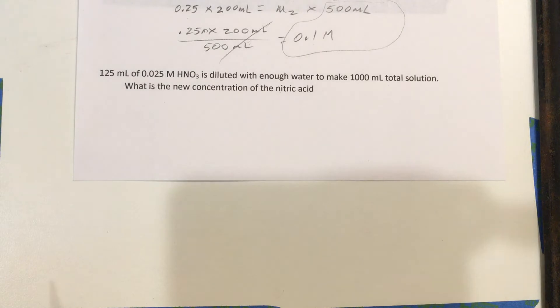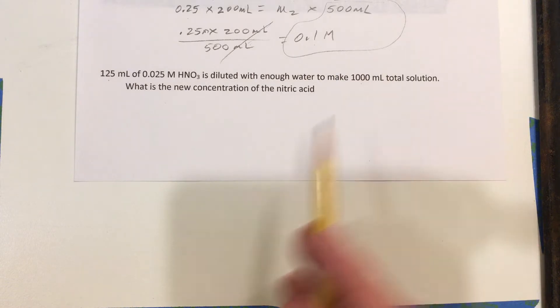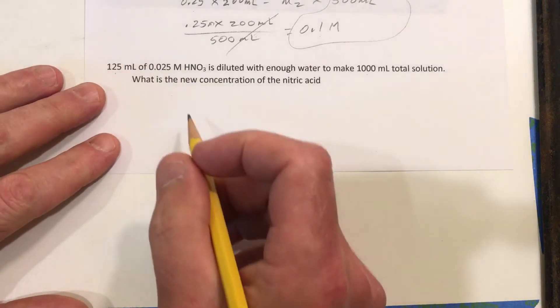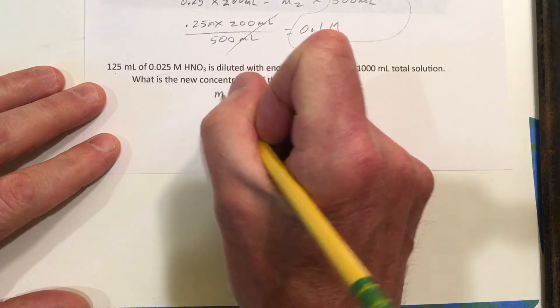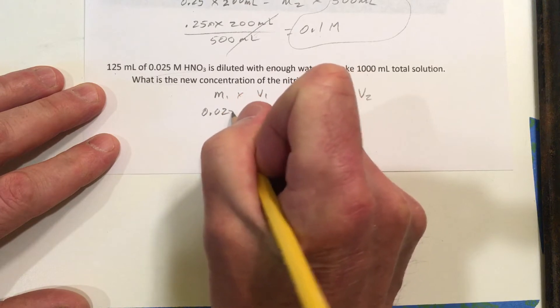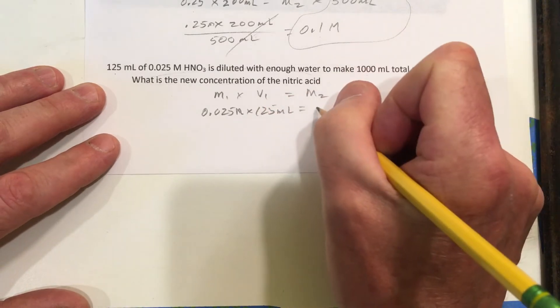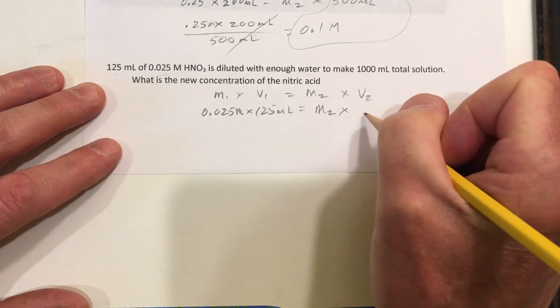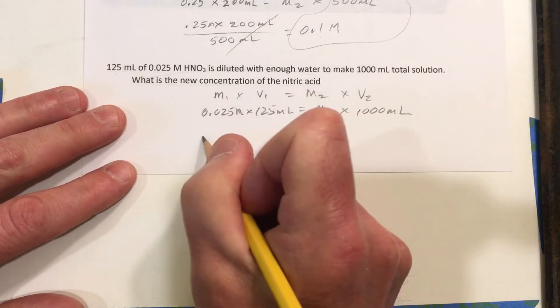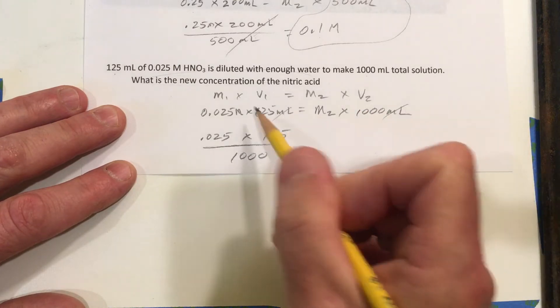The next one here, 125 milliliters of 0.025 molar nitric acid is diluted with enough water to make 1000 milliliters total solution. So here we're told what the final total is. Here we started with 125 and we ended up with a total of 1,000. So we must have added 875 milliliters to it. But that's not what we're looking for. We're just looking for the new concentration. So molarity 1 times volume 1 equals molarity 2 times volume 2. So 0.025 molar times 125 milliliters equals the new molarity times 1,000 milliliters total. So that's going to give me 0.025 times 125 divided by 1,000. And the milliliters will cancel, leaving us with the molarity.